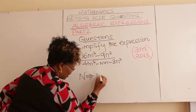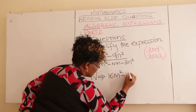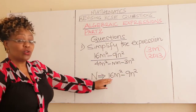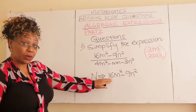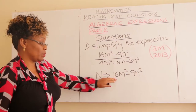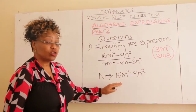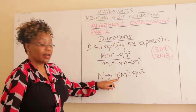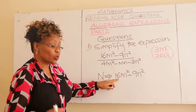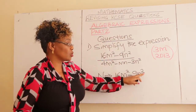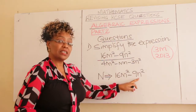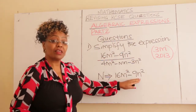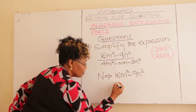Number 1. How do you factorize this expression, learner? This is an expression of two squares with a difference. If you look at this one, 16M squared — you can find its square root. 9N squared — it is possible to find its square root. And therefore, this is an expression of two squares with a difference.